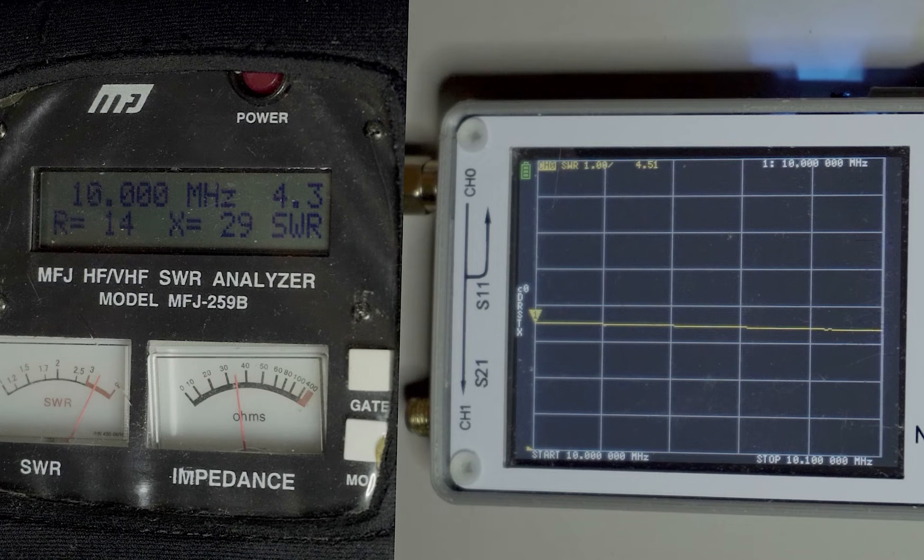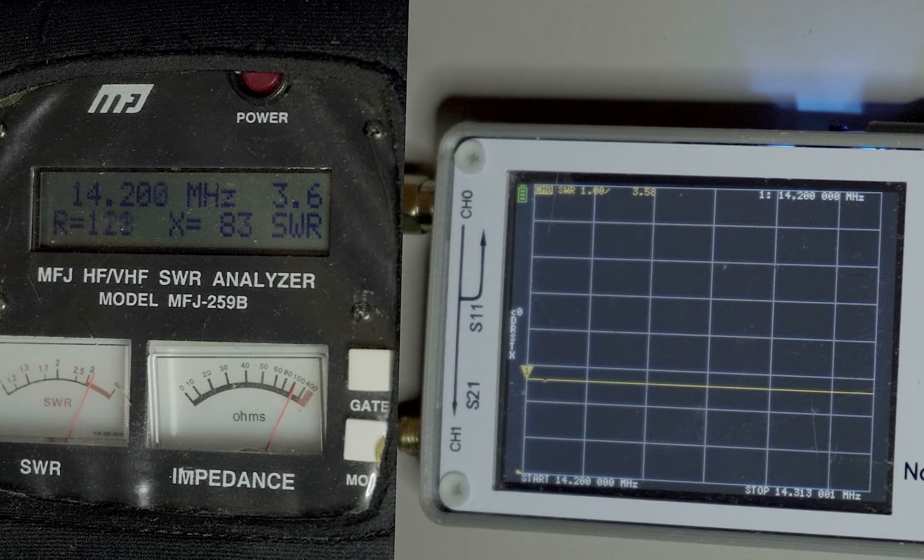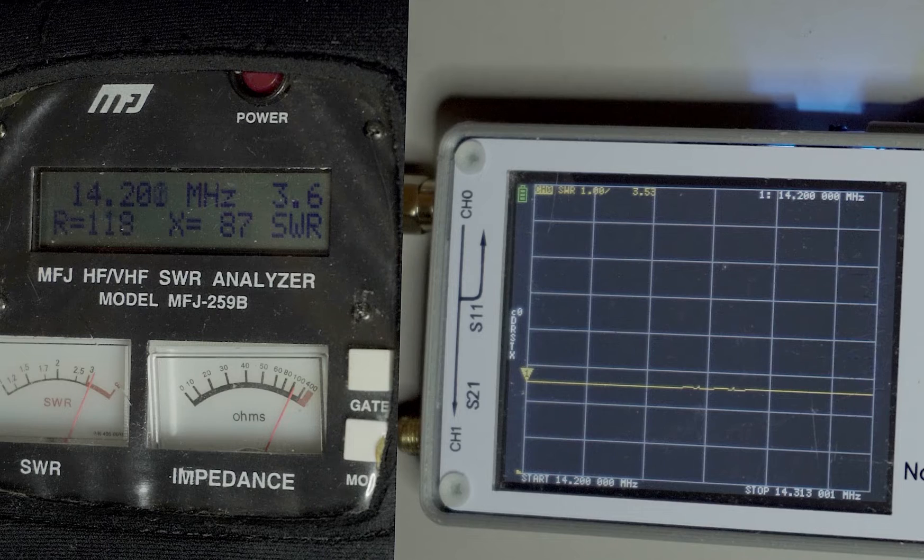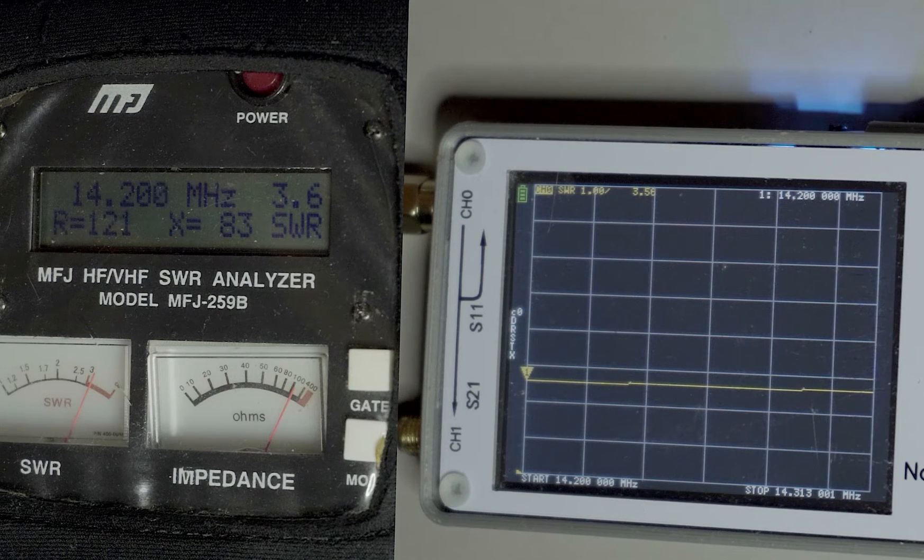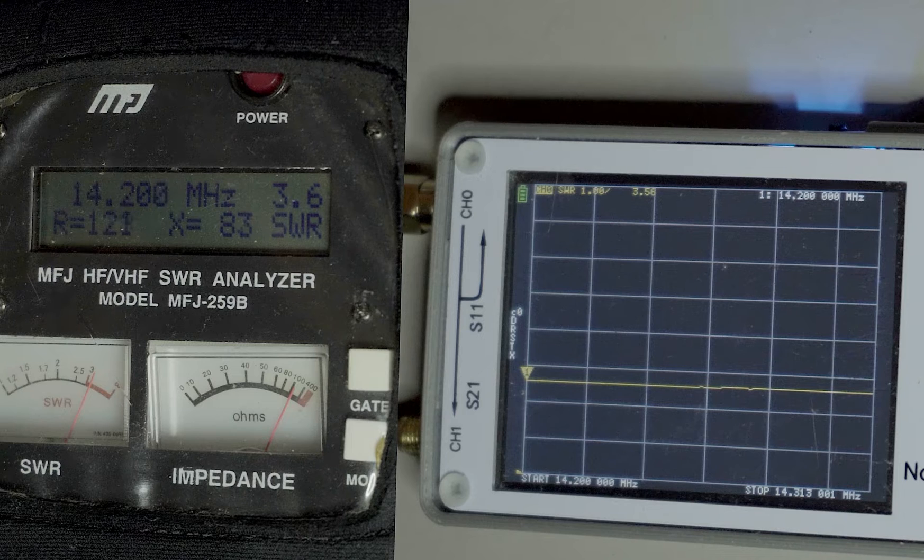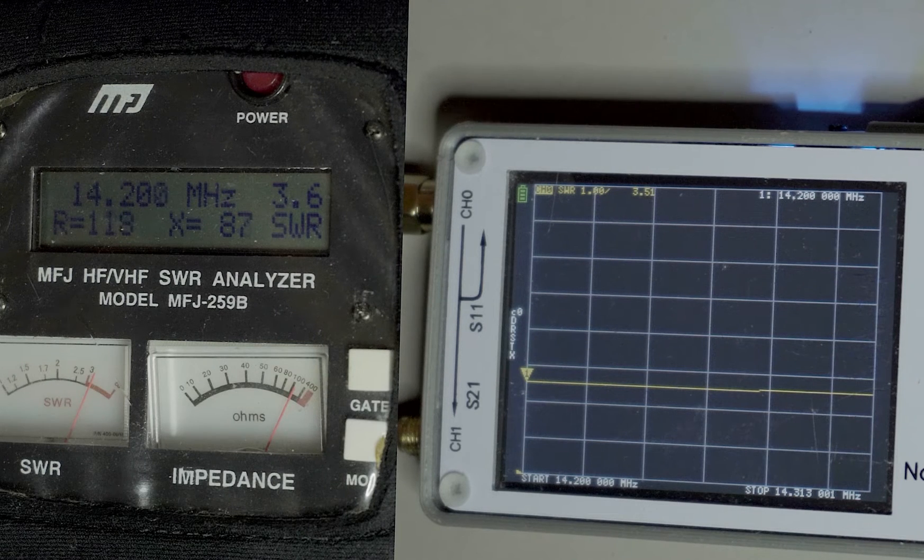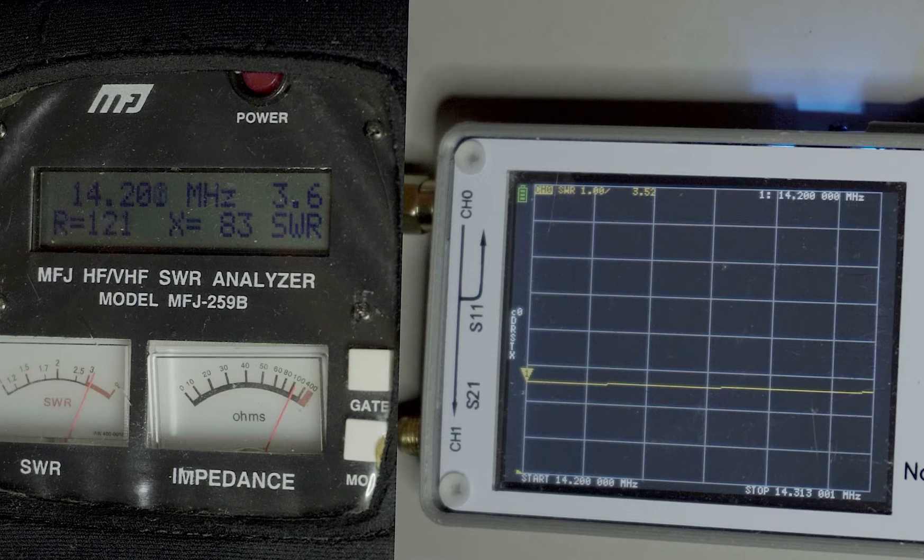MFJ reads 4.3, and the Nano VNA reads 4.5. Next on 20 meters, I was trying to check into the Maritime Mobile Net on 14.3, but I got the frequency wrong. On 14.2, the MFJ reads 3.6, and the Nano VNA reads 3.5.